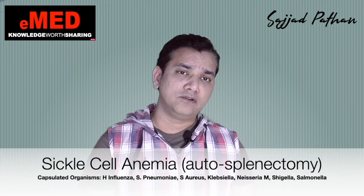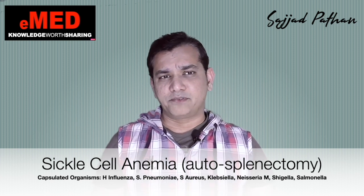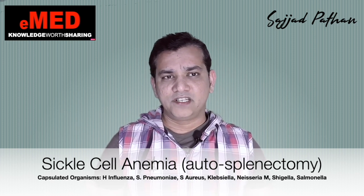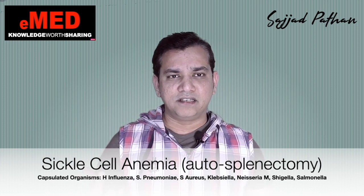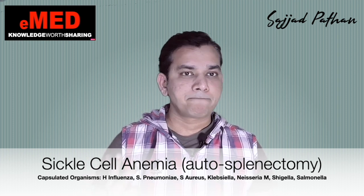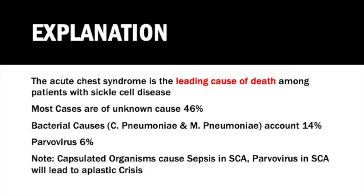Sickle cell patients are generally prone to infection with encapsulated organisms because they undergo autosplenectomy. Encapsulated organisms include Haemophilus influenzae, Neisseria meningitidis, Klebsiella, Staph aureus, Strep pneumoniae, Salmonella, and Shigella. However, the acute chest syndrome is the leading cause of death in sickle cell patients — about one quarter of sickle cell anemia patients will die of acute chest syndrome.